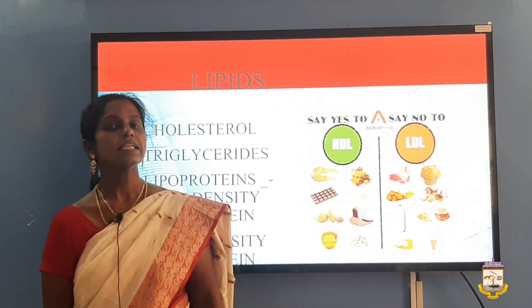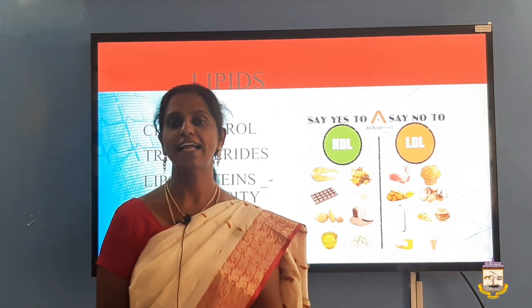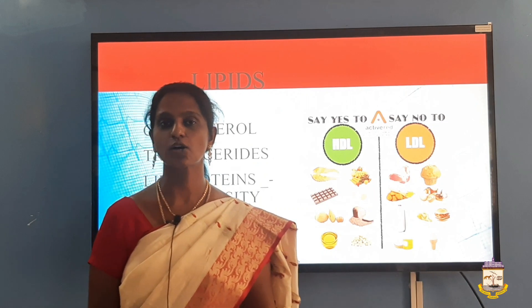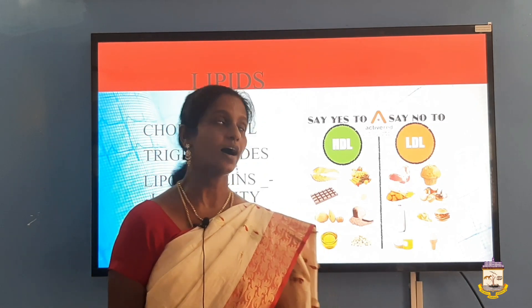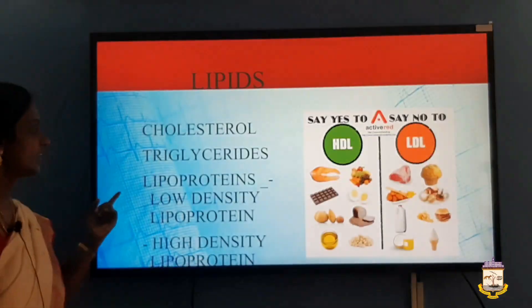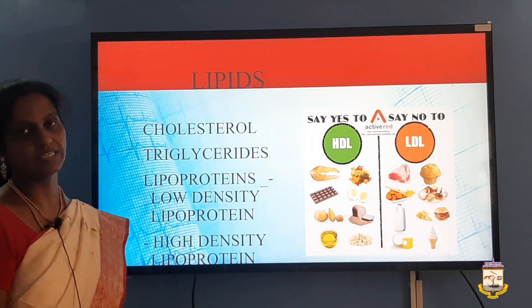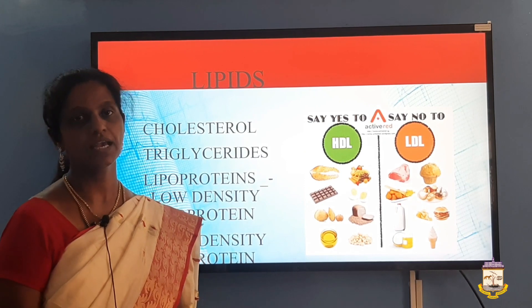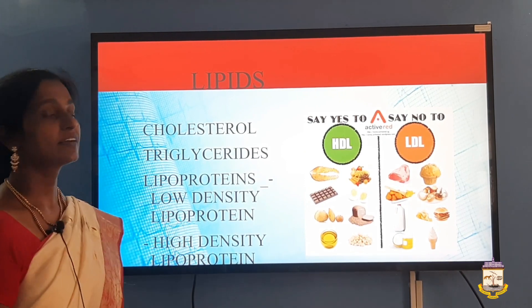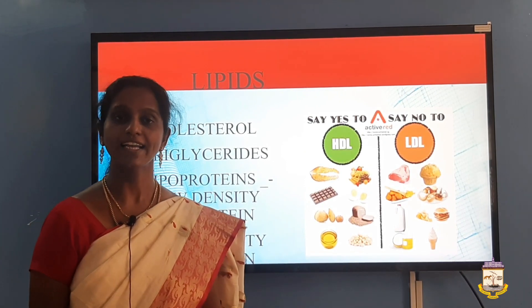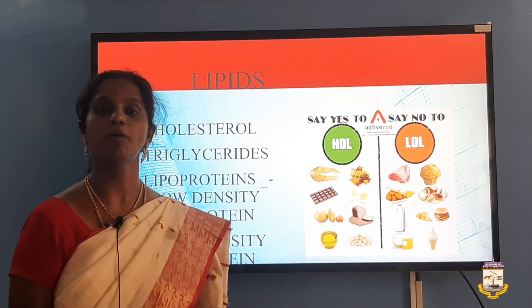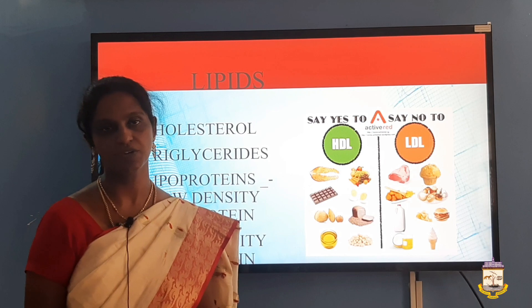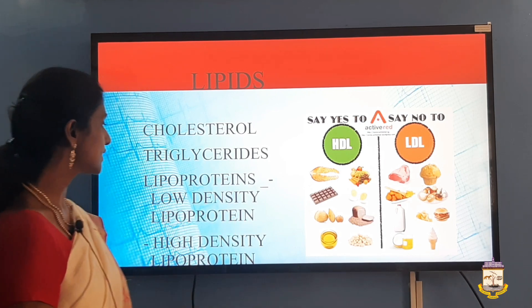Now we move on to lipids and their role in cardiovascular diseases. Lipids are fats and fat-related components present in blood. The main components are cholesterol, triglycerides, and lipoproteins. Cholesterol and triglycerides are the two main lipids in blood, and lipoproteins carry fat and cholesterol to tissues for metabolism and from tissues to the liver for excretion.